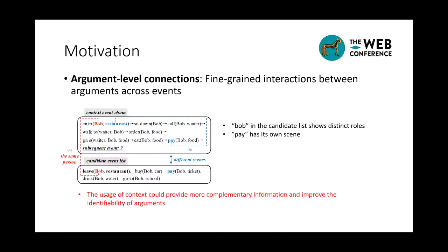Similarly, the word pay also has its own theme. Even though Bob pay tickets has high lexical overlaps with the context events, argument level connections can help to understand the true object of pay in the restaurant theme. That means the usage of context can provide more complementary information and improve the identifiability of arguments.